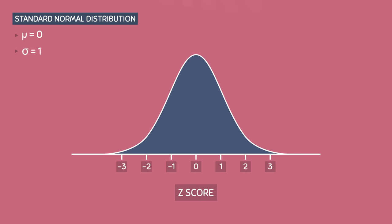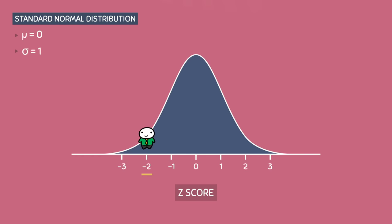A z-score tells us how many standard deviations an observation is from the mean mu. For example, a z-score of negative 2 tells me that I am 2 standard deviations to the left of the mean, and a z-score of 1.5 tells me that I am 1.5 standard deviations to the right of the mean.